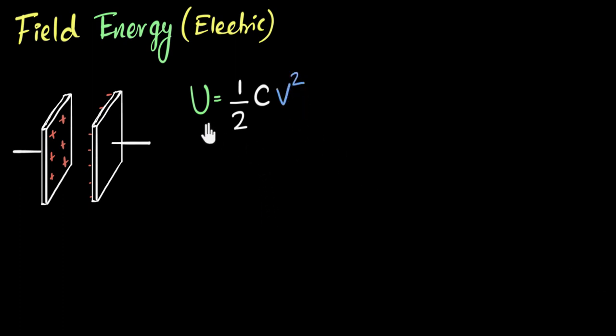Now, because I want to talk about energy stored in electric field, what we'll do with this equation is we'll try to somehow bring electric field into this equation and get rid of C and get rid of V. So I want you to think a little bit about how can we do that? How can we bring electric field in this equation?